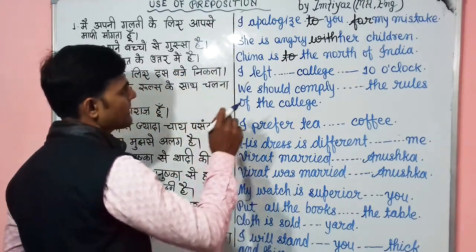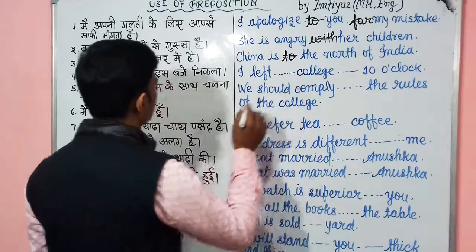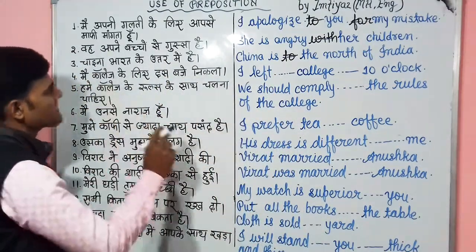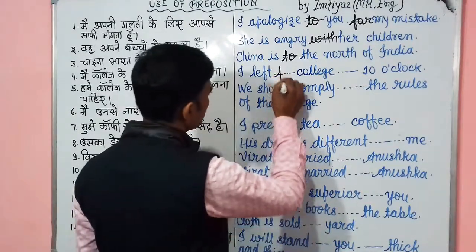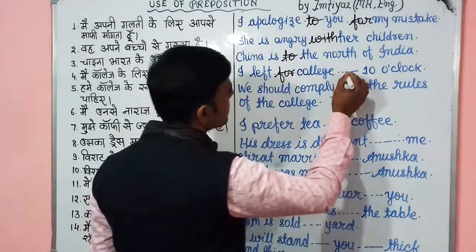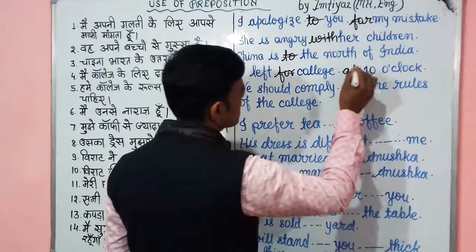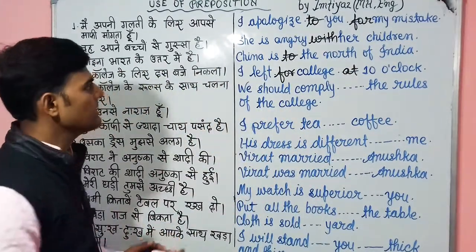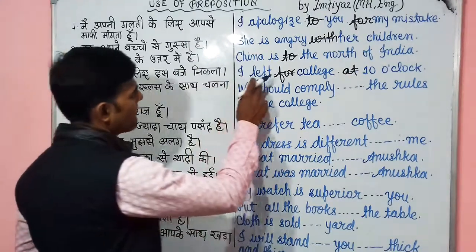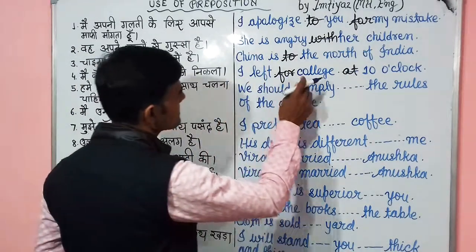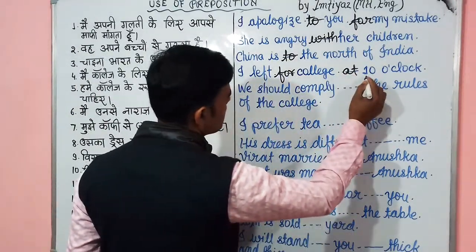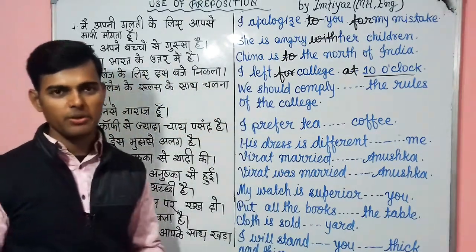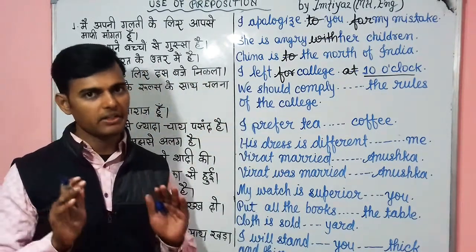I left for college at 10 o'clock — मैं college के लिए 10 बजे निकला। 'Leave for' का मतलब है रवाना होना, कहीं से निकलना। जब भी time दिखाना हो — 10 o'clock, 11 o'clock, 5 o'clock — तो वहाँ पर 'at' लगता है।